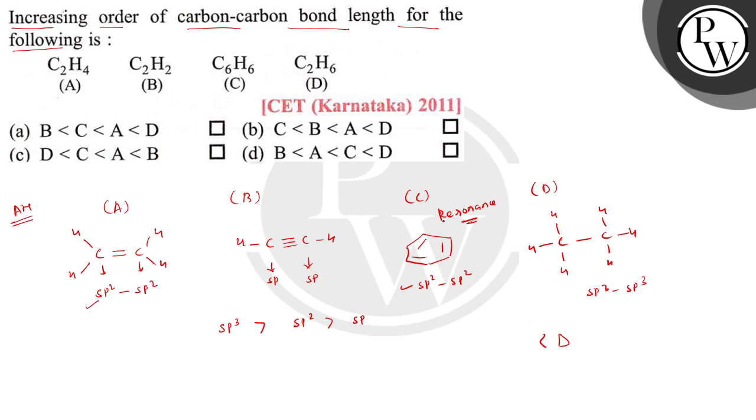So as you compare the bond length in A and C, C will have higher bond length than A. And B has the least bond length due to the overlapping of sp hybridized orbital.